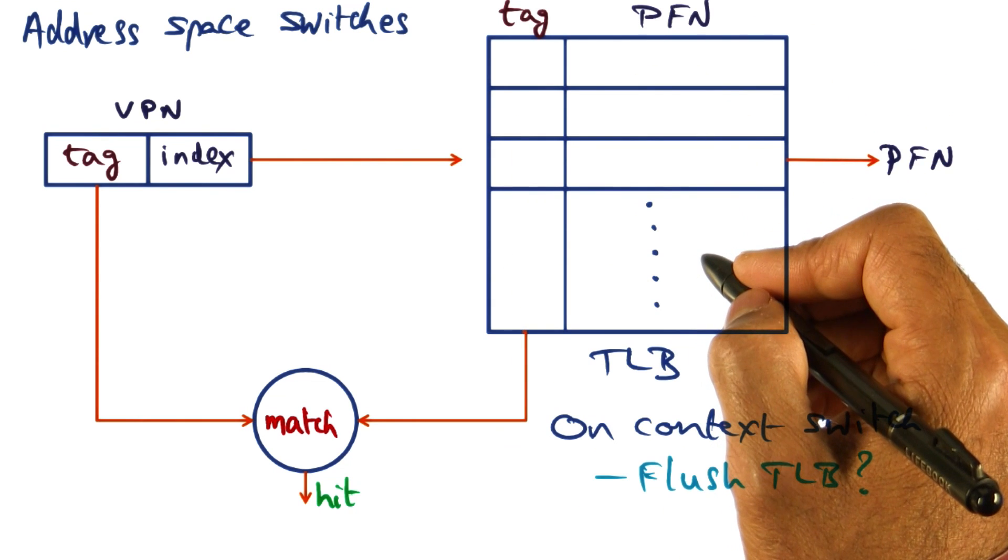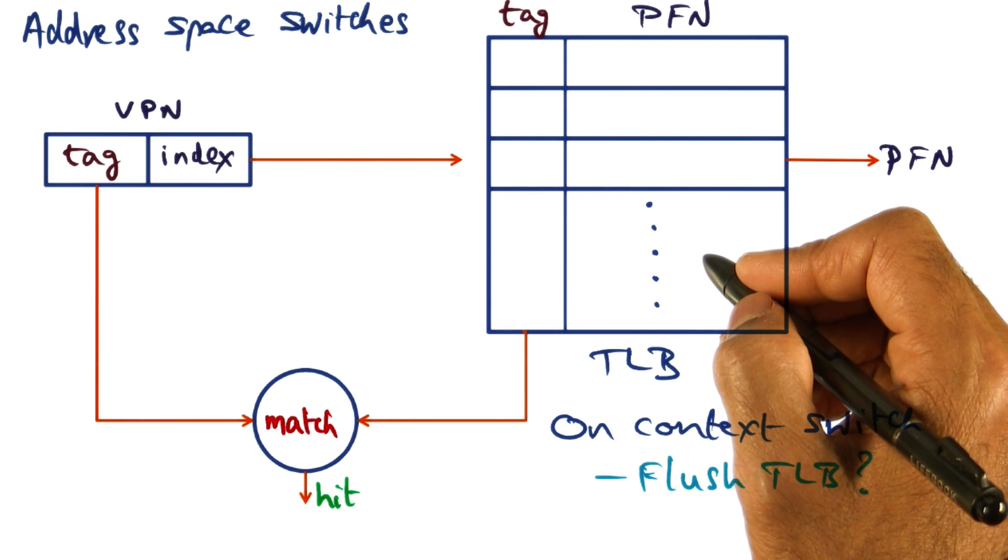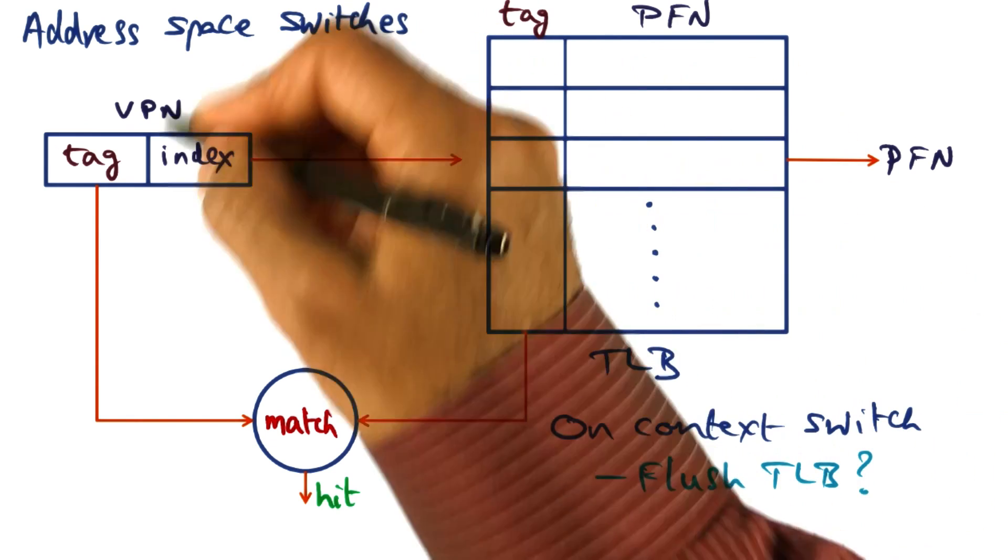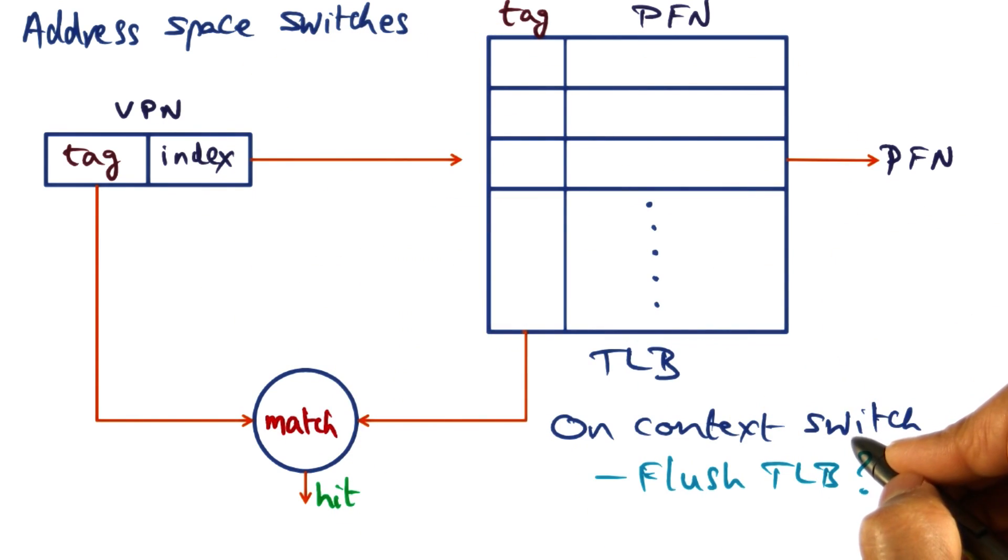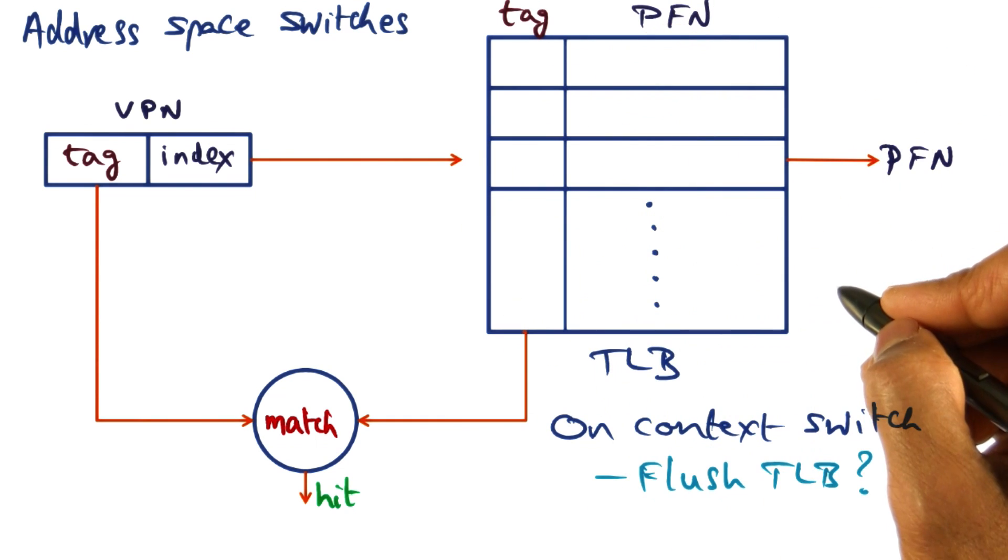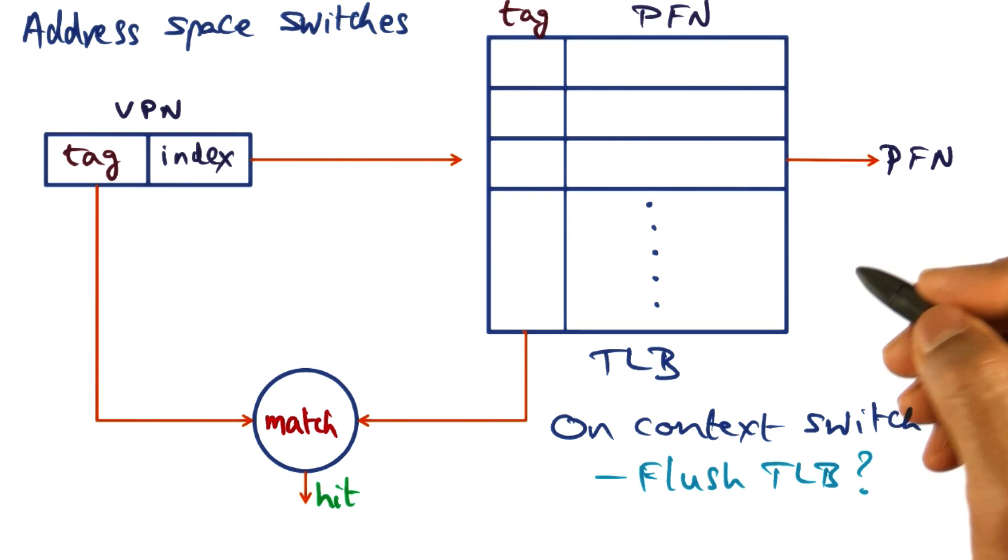So in other words, if the TLB contains the translations for a particular process that is currently executing on the CPU, if we do a context switch, do we have to flush the TLB because the virtual address to physical address mapping is going to be different for the new process or new thread that is going to run on the processor now.